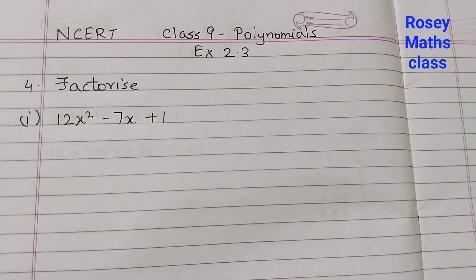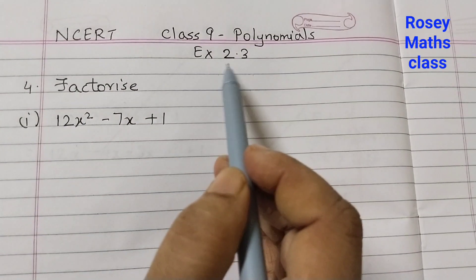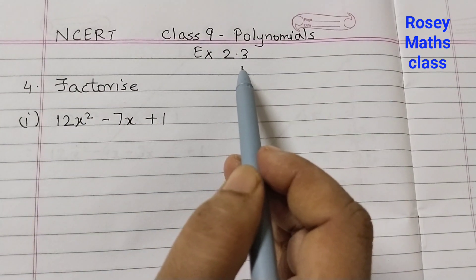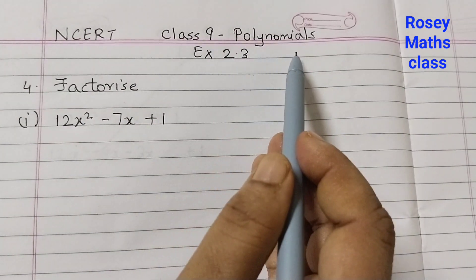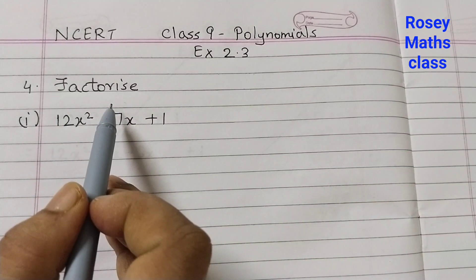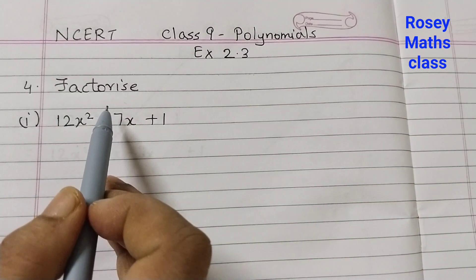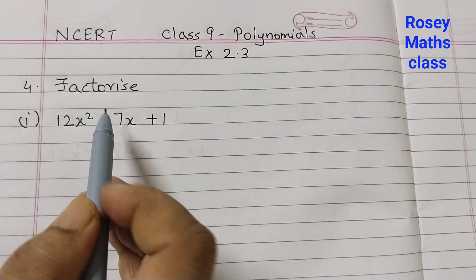Hello everyone, welcome back to Rosie Maths class. Today we shall discuss question number 4 of exercise 2.3, chapter 2, polynomials. Factorize — factorize means to find out the factors.